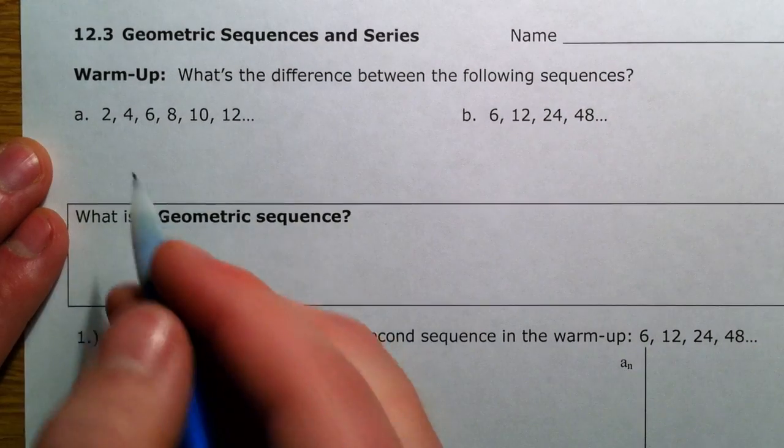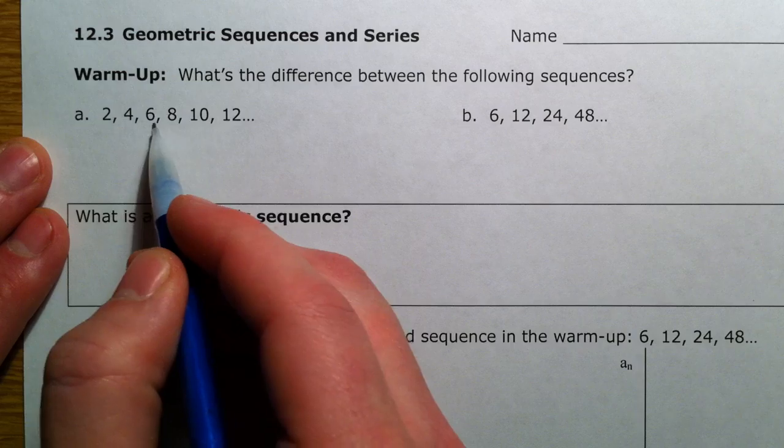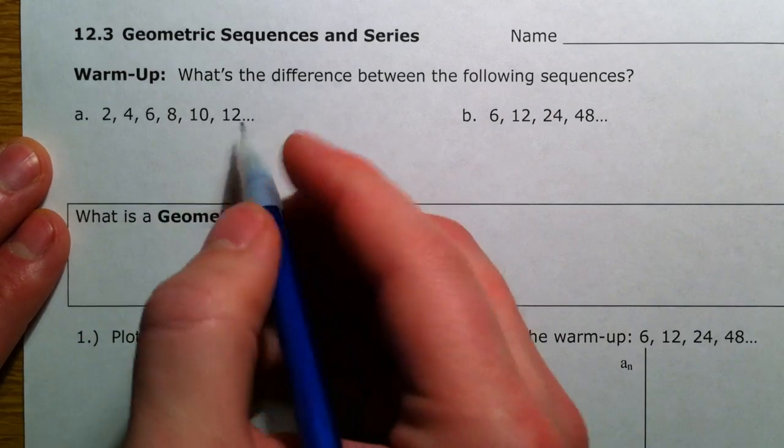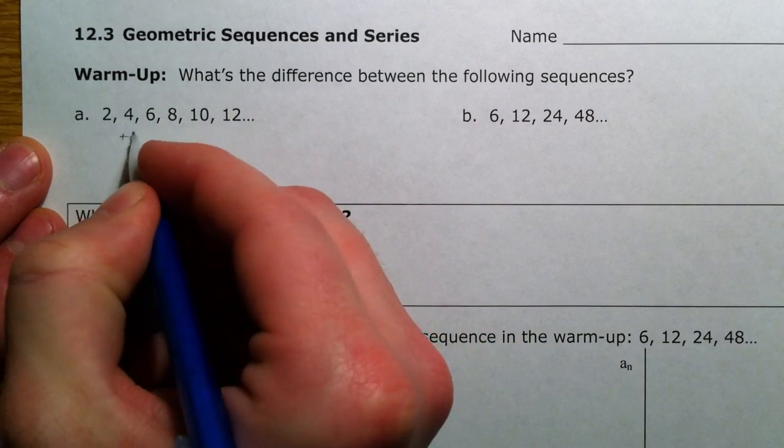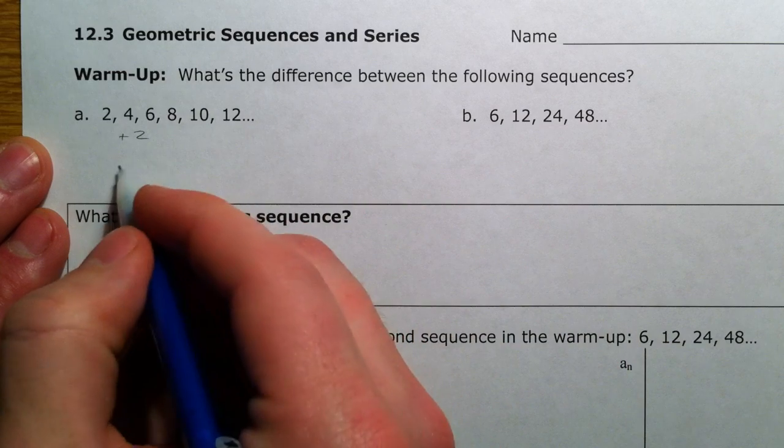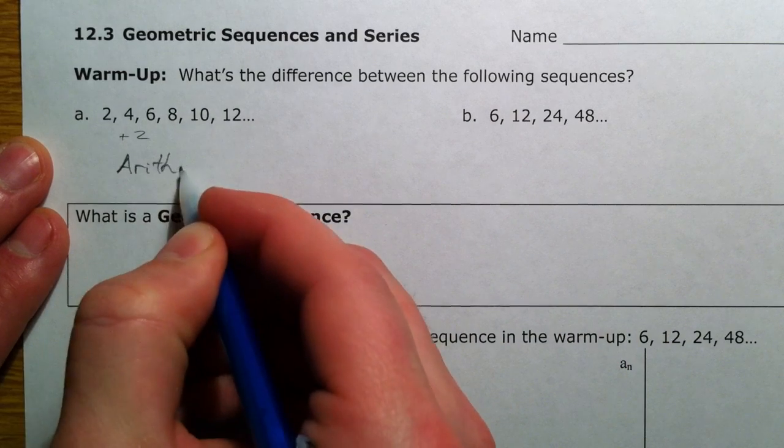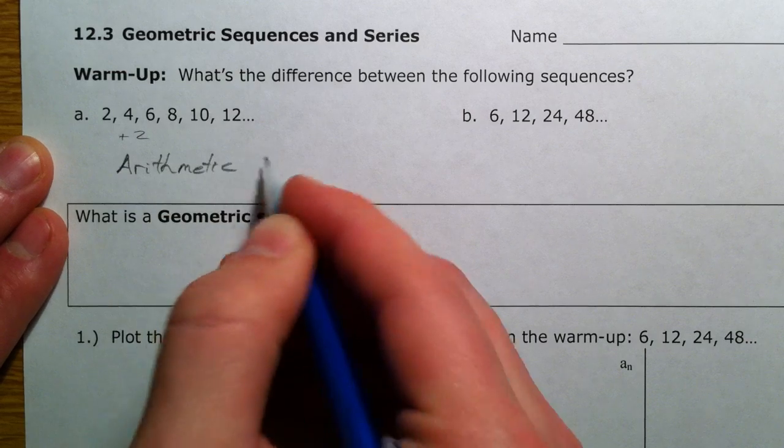Alright, let's warm up real quick. So 2, 4, 6, 8, 10, 12 - we quickly see that we're adding 2 every time. And so this is what we call an arithmetic sequence.